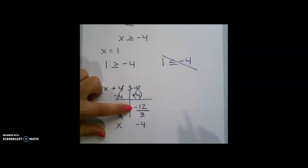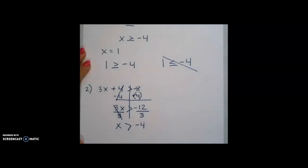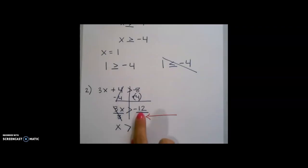Notice, I'm taking a negative number divided by a positive number. I'm not dividing by a negative number, so I don't need to flip my sign. In order to flip our sign, the number that we are dividing by has to be the negative number. Since the number that is being divided is the negative number, we do not need to flip our sign.